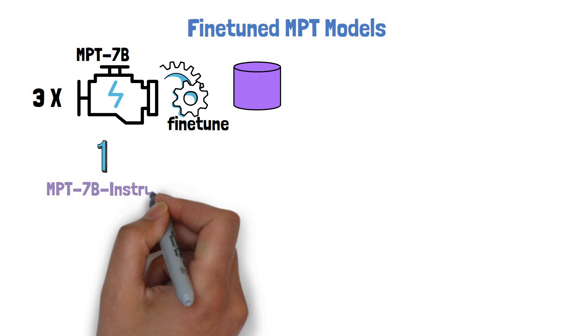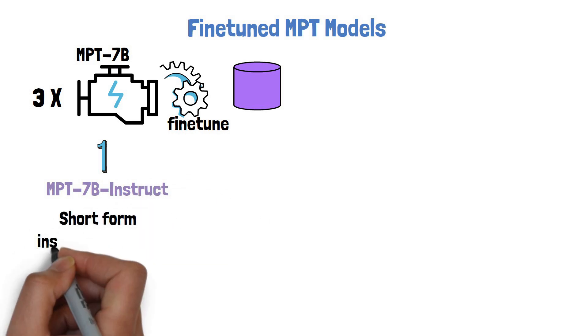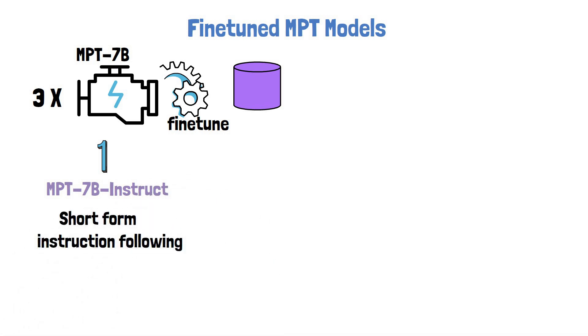The first one is called MPT-7B Instruct, which is purposed for short-form instruction following. It was trained on datasets such as Dolly and is also commercially usable.